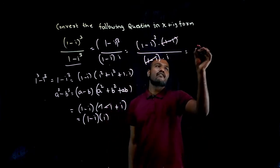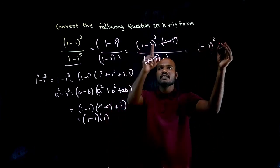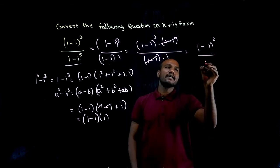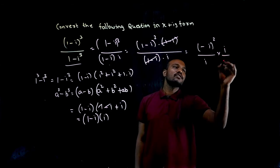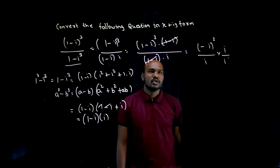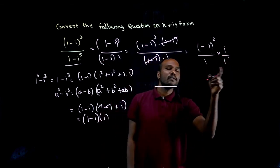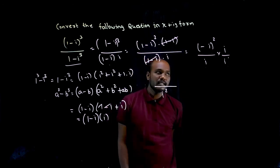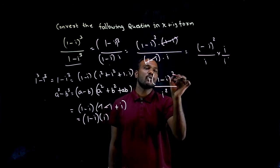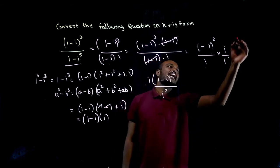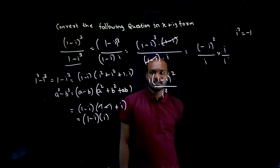I have (1-i)² in the numerator and i in the denominator. I will multiply by i in both numerator and denominator. i times i is i², and in the numerator I have i times (1-i)². What is i² value? Minus 1.